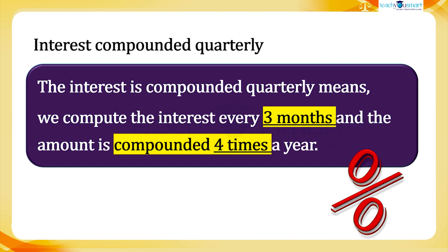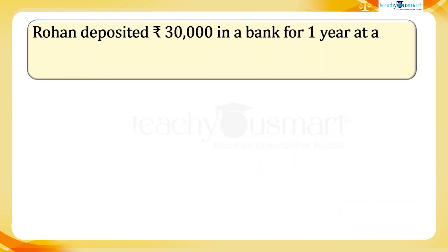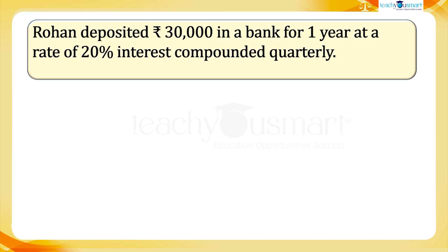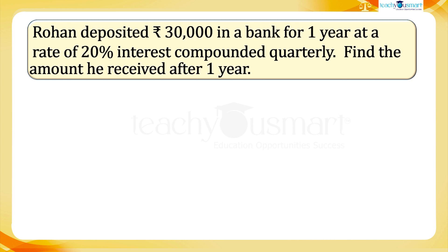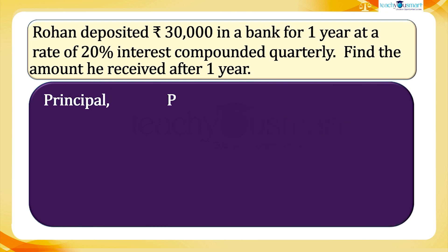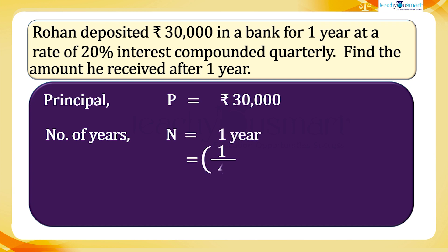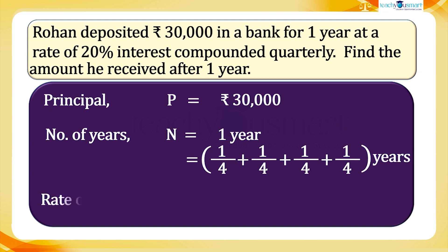Let's explain by doing a problem. Rohan deposited 30,000 rupees in a bank for one year at a rate of 20% interest compounded quarterly. Find the amount he received after one year. Here we have principal P equals 30,000 rupees, number of years N equals one year which is four quarters, and rate of interest R equals 20%.